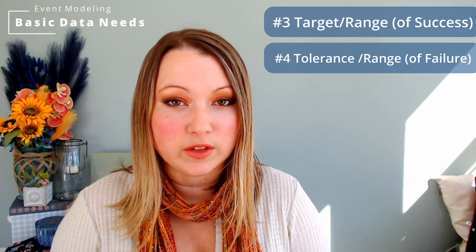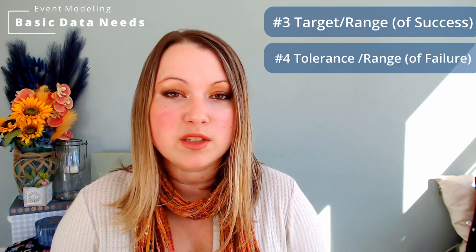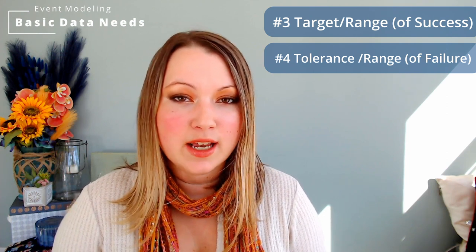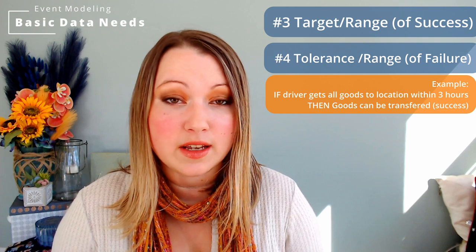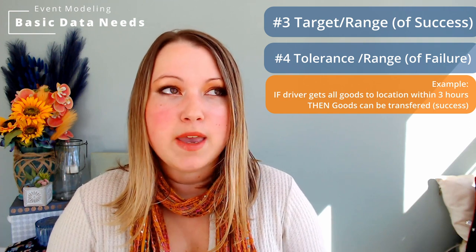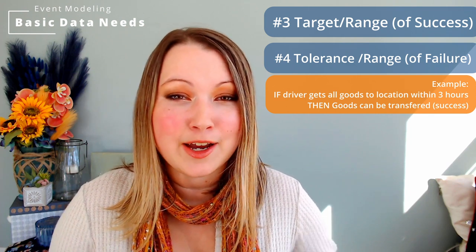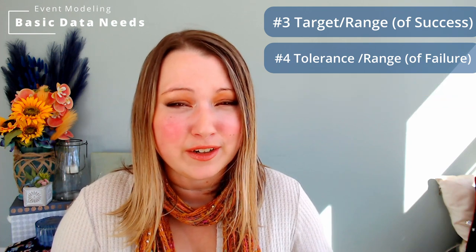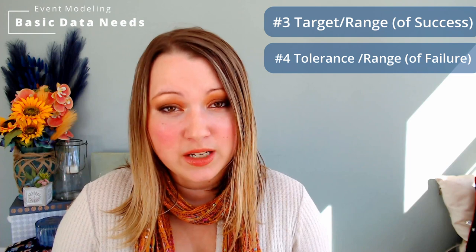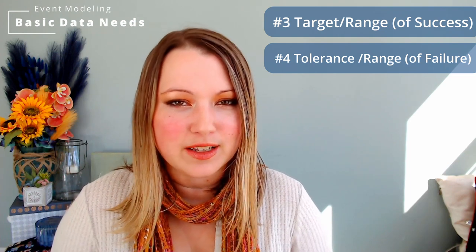The next two things you really need to talk about with your stakeholders are: how are you defining success and how are you defining failure? Both of these can be ranges — there could be multiple events or actions that prove success or failure. In supply chain, your success might be that your driver got to their desired location within three hours. But even if they did, if they didn't tie everything down and you lost half your goods, that's probably a failure — so you have to define this as a range of mini events within the larger event cycle.